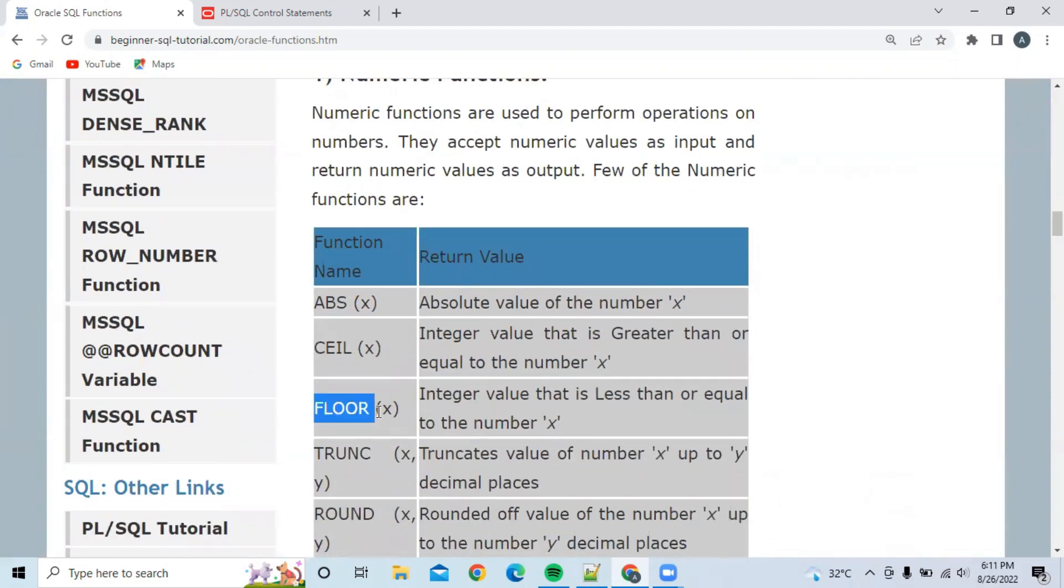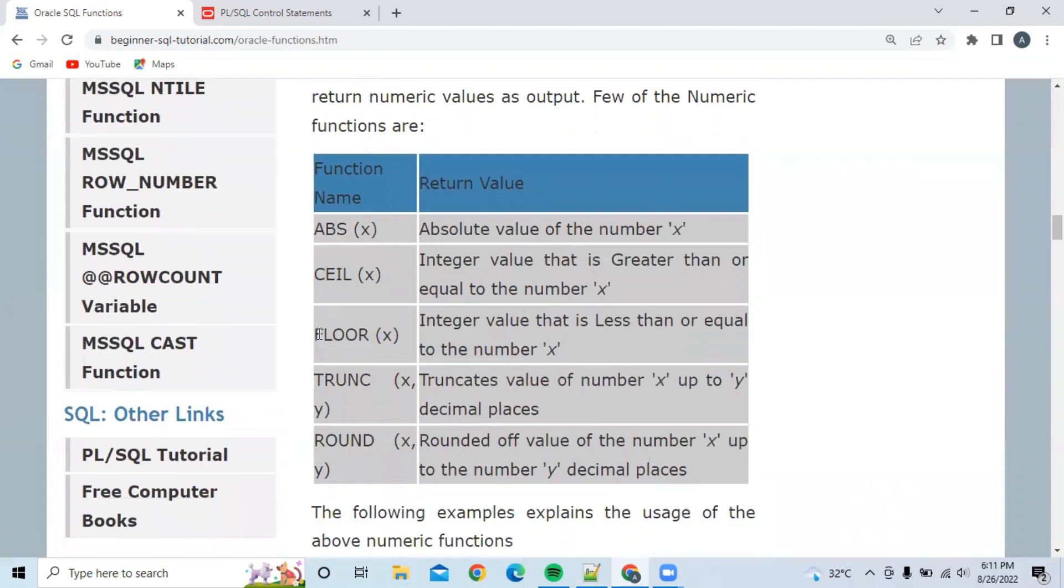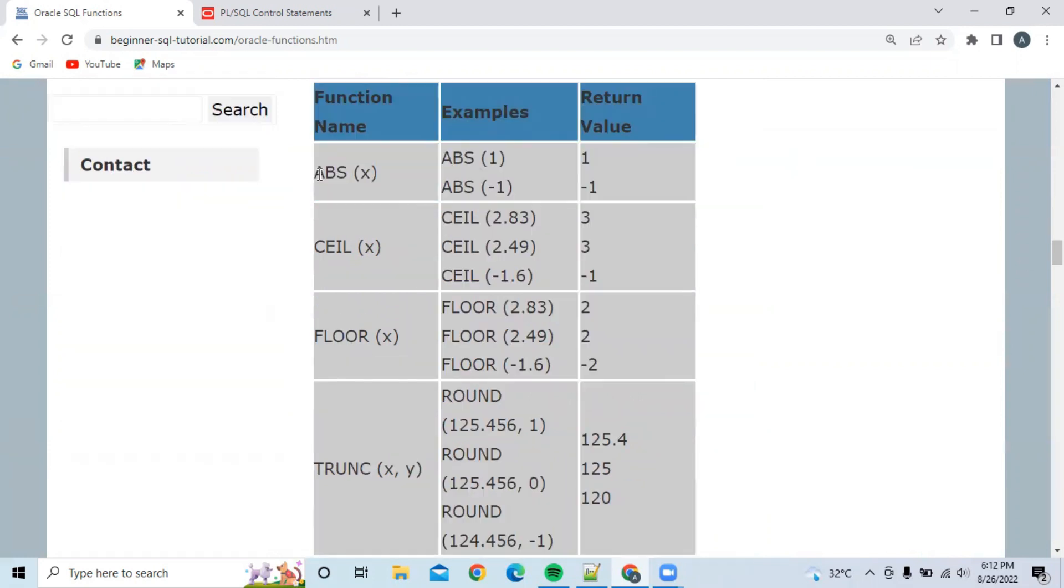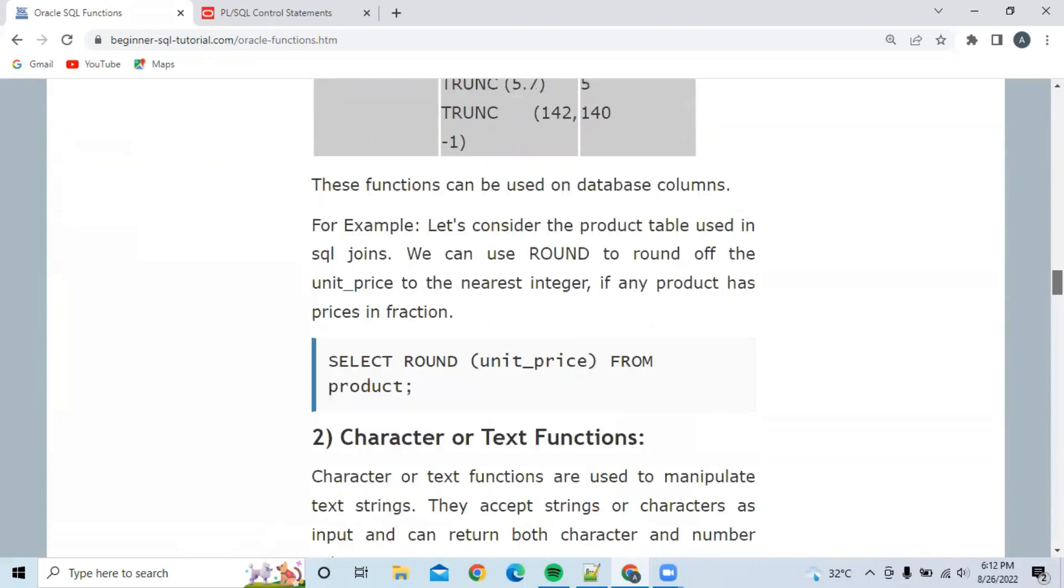What is the use of TRUNC function and ROUND function, because they will give a statement, apply these functions, and ask you what the output is. If you scroll down, they have given different functions and their examples. ABS of 1 output is 1, ABS of -1 output is 1, because the absolute value of any negative number is positive. For CEIL function, they have given different outputs. You have to study these.